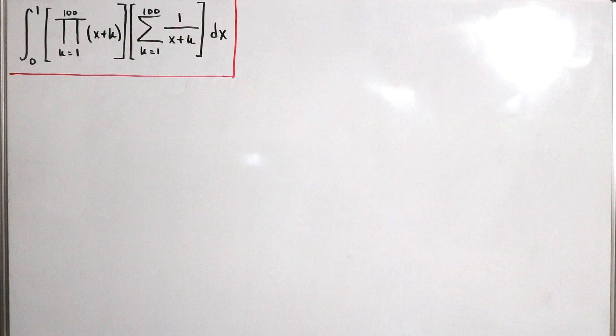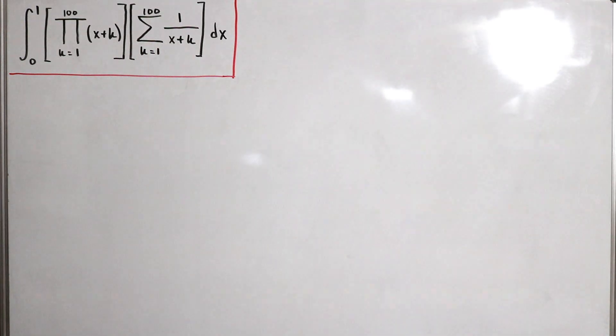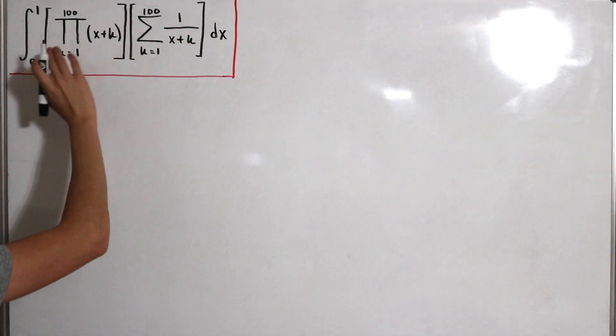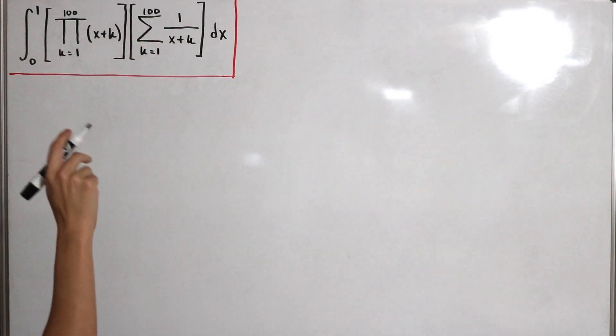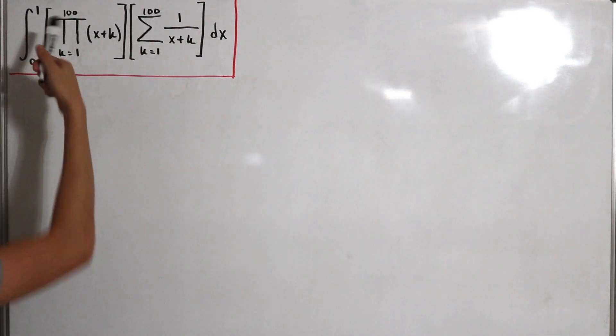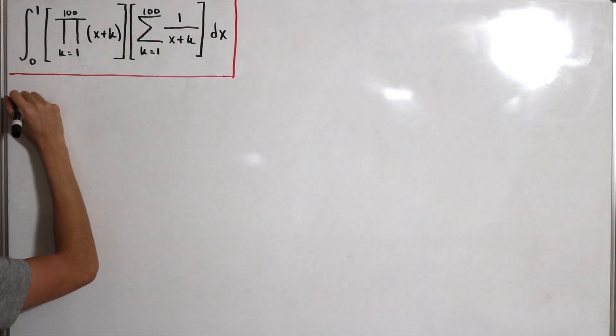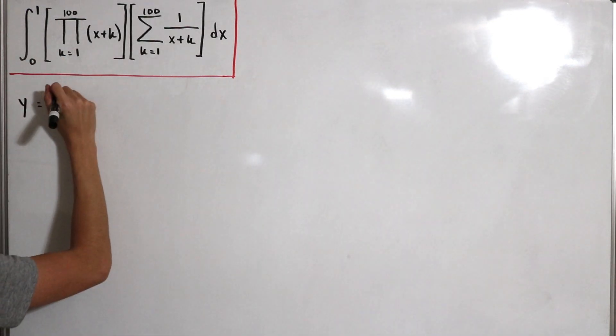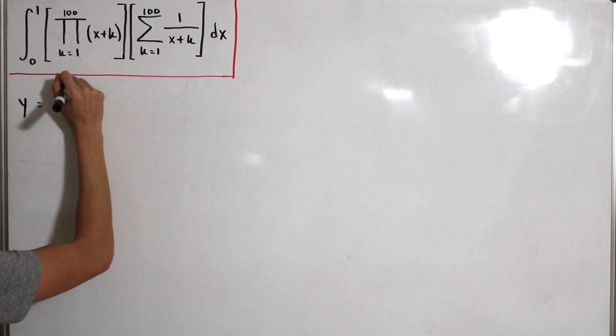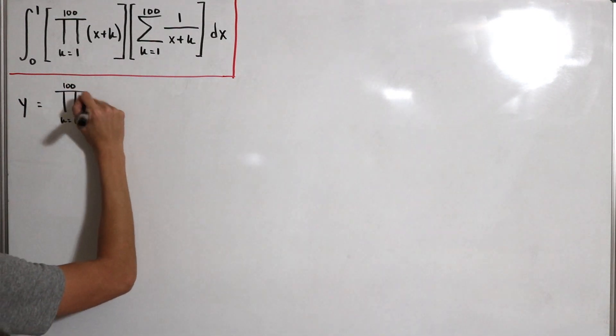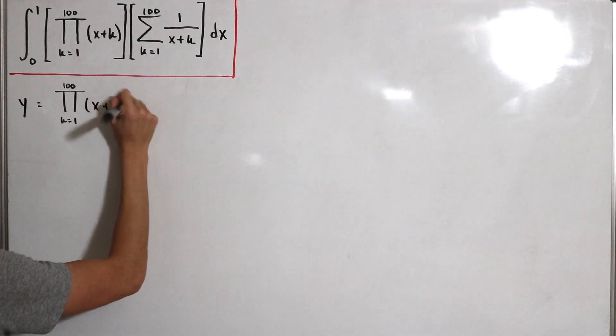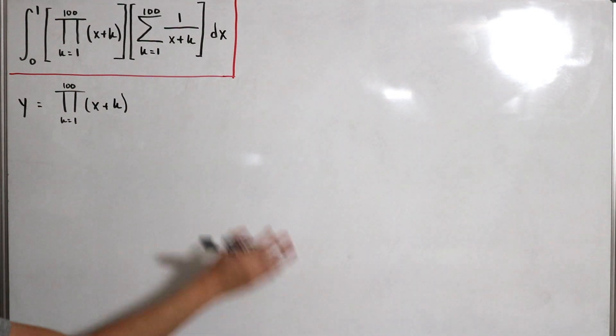Given this integral, I said we're going to do a substitution. Let's define a variable for one of the series. We're going to let y equal the partial product series, so y equals the product from k equals 1 to 100 of x plus k.